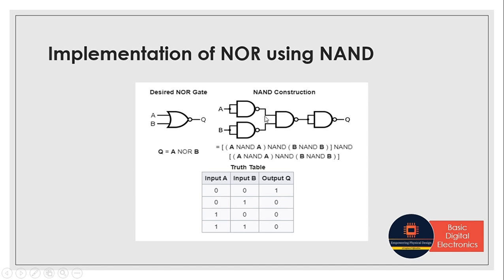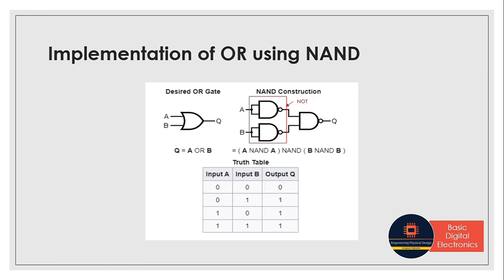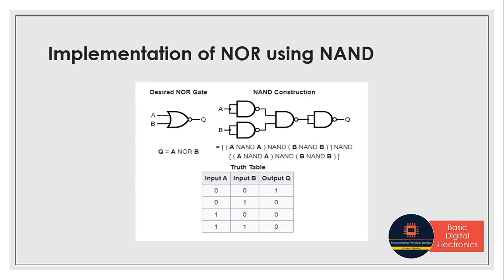Next, we will see how to implement a NOR gate using NAND gate. NOR means OR followed by a NOT. From our last slide, we have seen this is the OR gate, where we have two NOTs followed by a NAND. So here also, we have OR followed by a NOT, and that gives us the NOR gate.